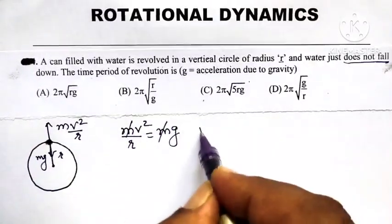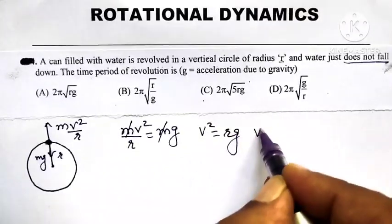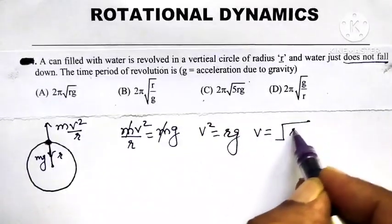So, this m on two sides gets cancelled. v square is equal to rg or v must be equal to under root of rg.